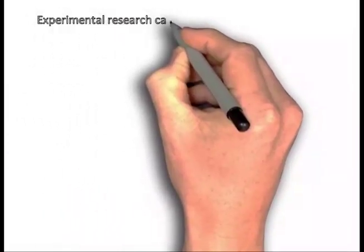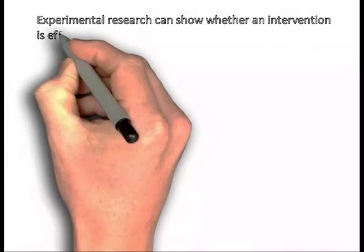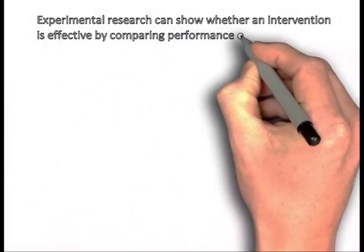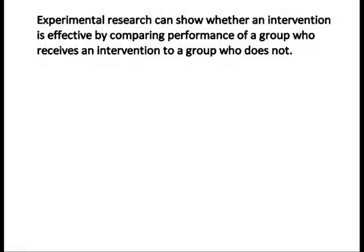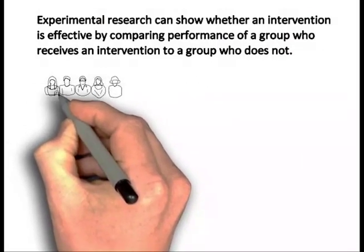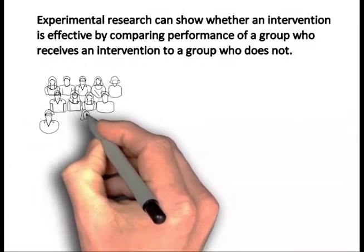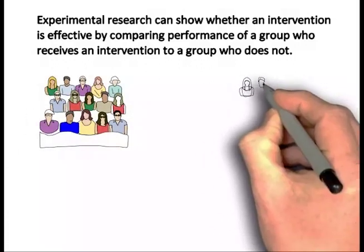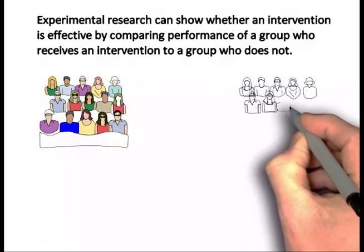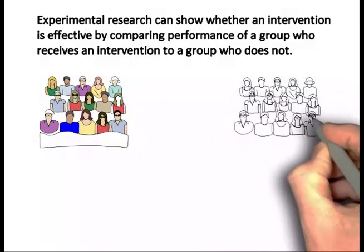Experimental research can show whether an intervention is effective by comparing performance of a group who receives an intervention to a group who does not. In order to determine if an intervention is effective, the two groups being compared need to be as identical as possible. This is what allows causal conclusions to be drawn.